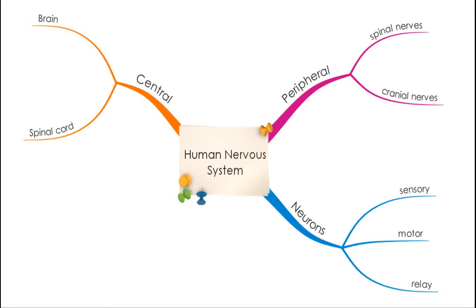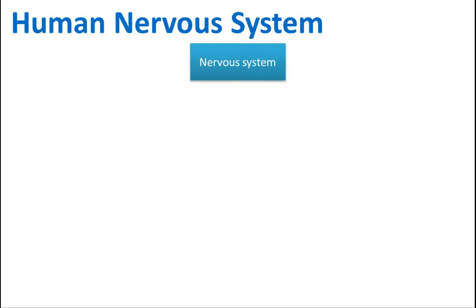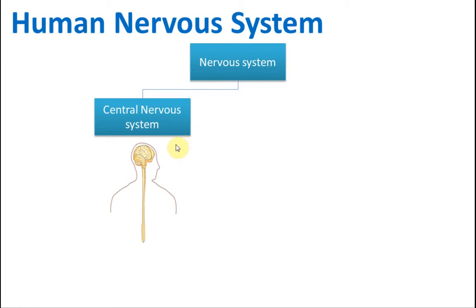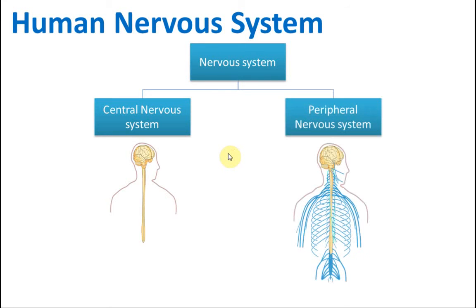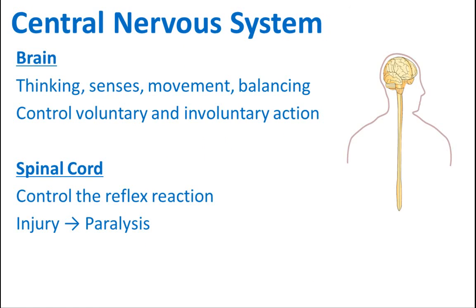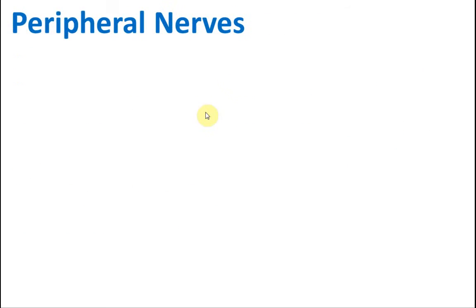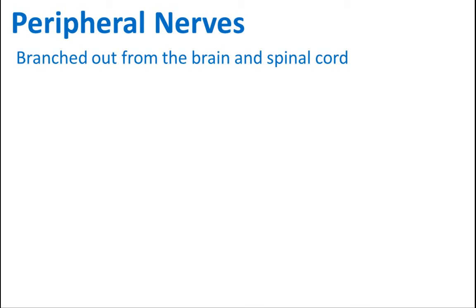Almost every year questions come out about neurons. The nervous system consists of two parts: the central nervous system, which consists of the brain and the spinal cord. The brain is responsible for thinking, senses, movement, balancing, and control of voluntary and involuntary actions.